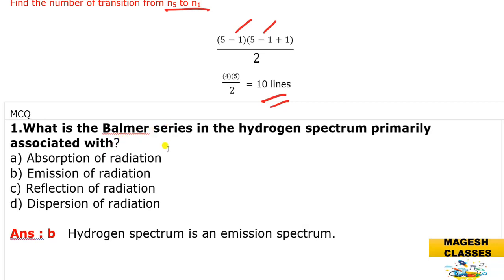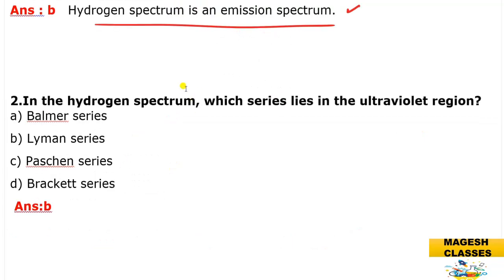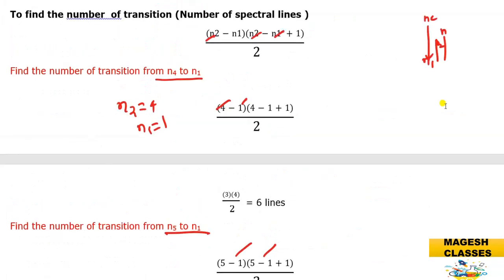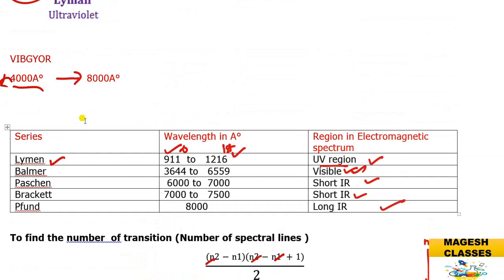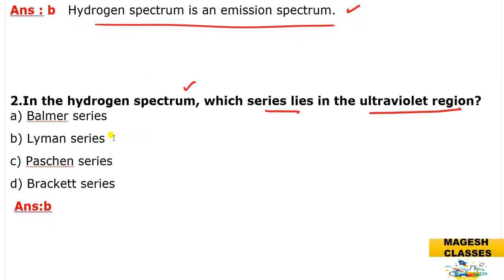Now some MCQs. Question: What is the Balmer series in the hydrogen spectrum primarily associated with? The hydrogen spectrum is the emission spectrum, so the answer is emission radiation. Second MCQ: Which series in the hydrogen spectrum lies in the ultraviolet region? From the table, the Lyman series falls in the UV region (911–1216 Å), while others fall in visible and infrared regions. Answer: Lyman series.